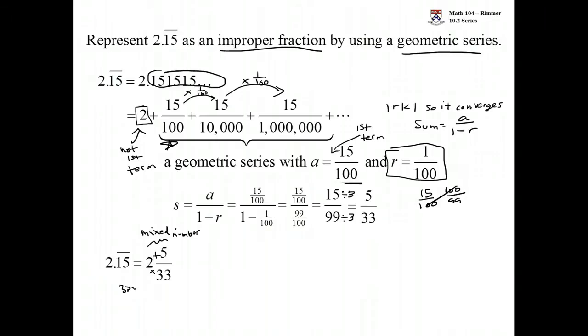So 33 times 2 is 66, 66 plus the 5 is 71. So you end up with the final answer of 71 over 33.